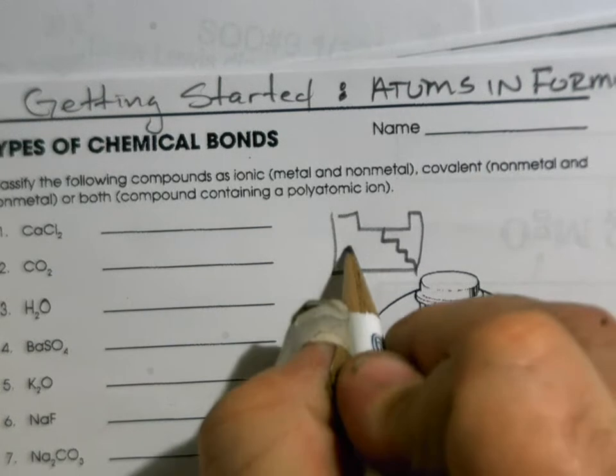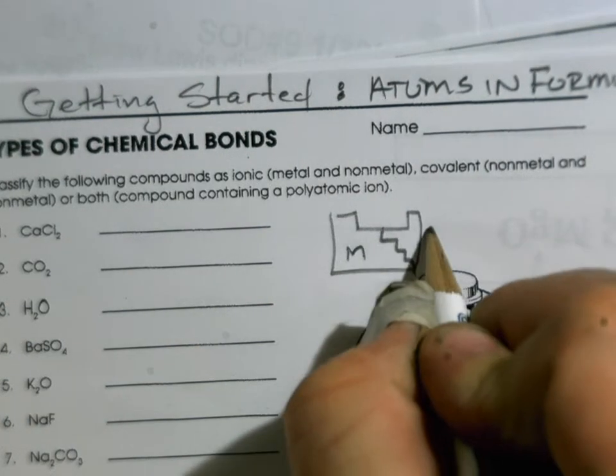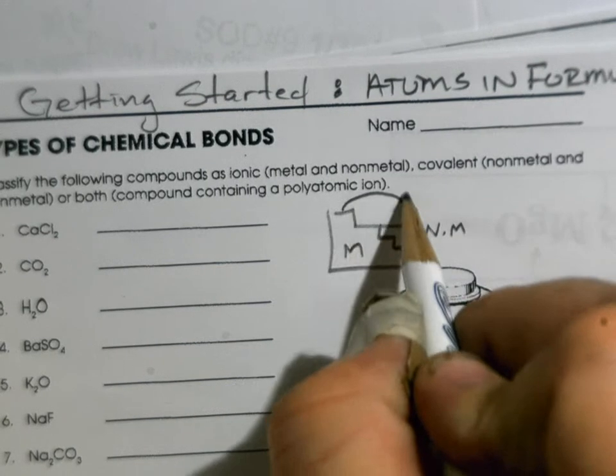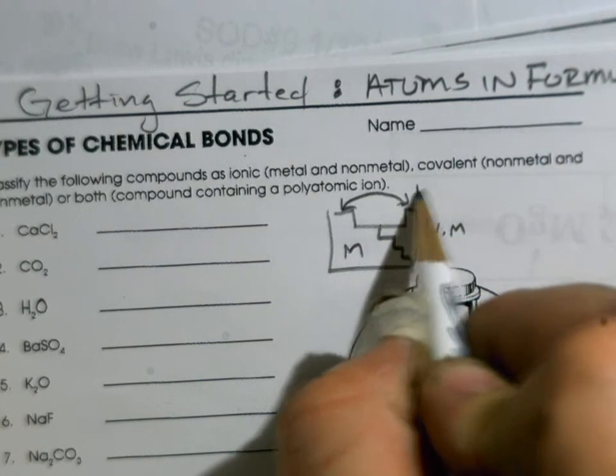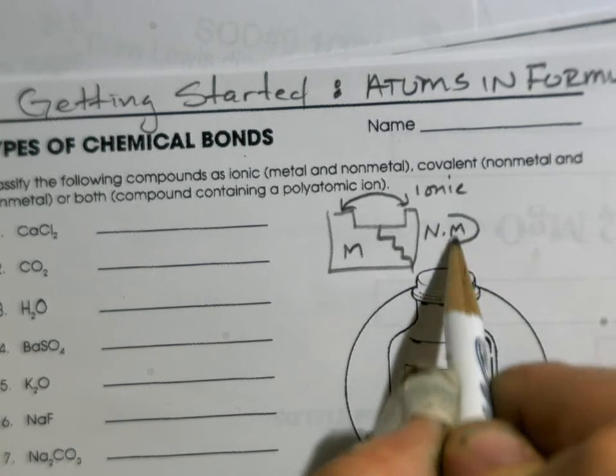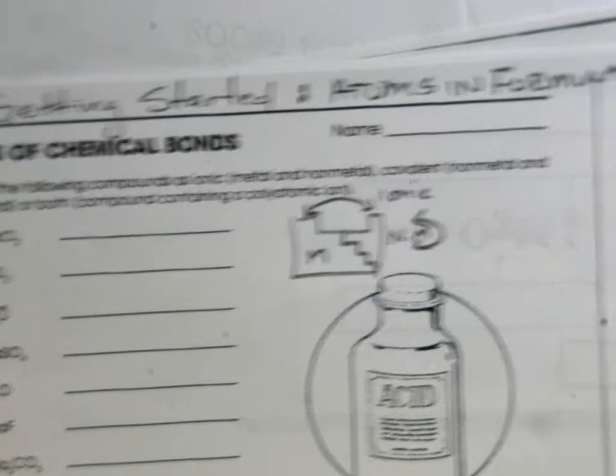That separates the metals with an M from the non-metals. When a metal bonds to a non-metal, we call that ionic. When a non-metal bonds to a non-metal, we call that covalent.